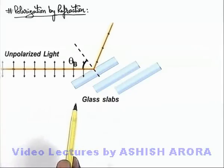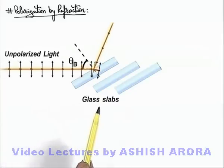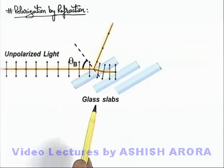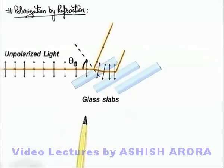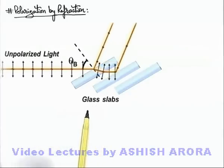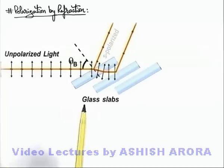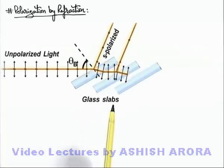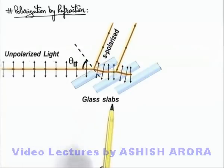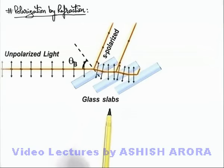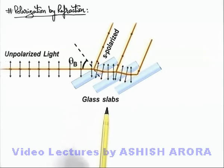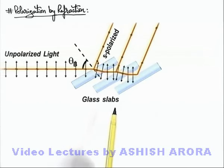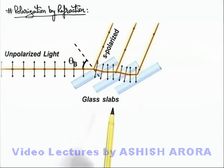The light which is transmitted into the slab is partially polarized. When it is incident on the next slab again at Brewster's angle, the reflected light is plane polarized and the transmitted light is further partially polarized. As the light incident on the second slab was already partially polarized, the light transmitted into the second slab will be more polarized.